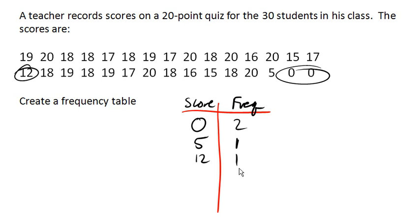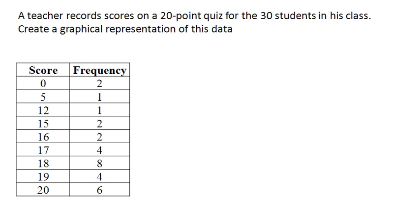And then, let's see, next smallest. I've got a 15 here and another one there. So it looks like I've got two 15s. And I would go down the line doing the same thing for each of the possible scores. And the resulting table would end up looking something like this.